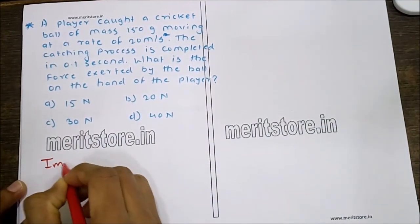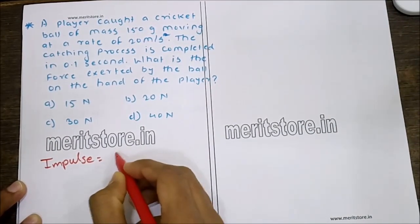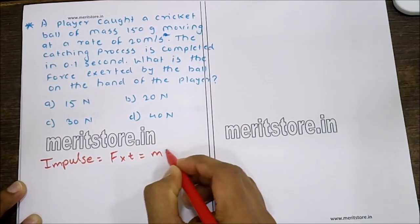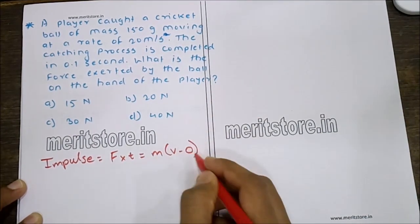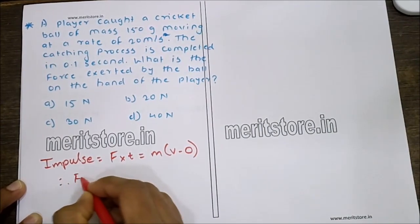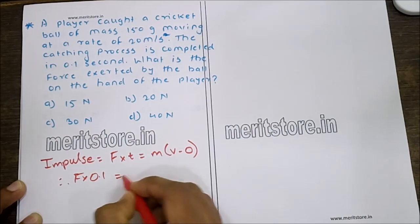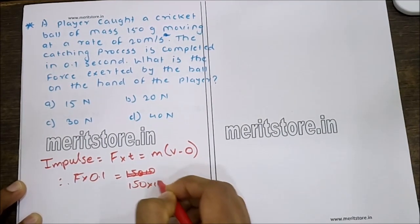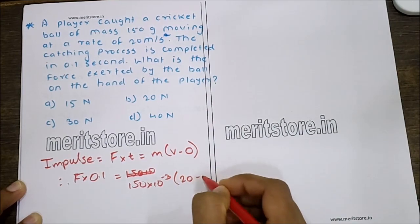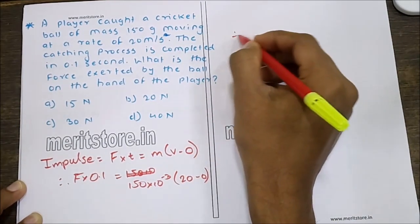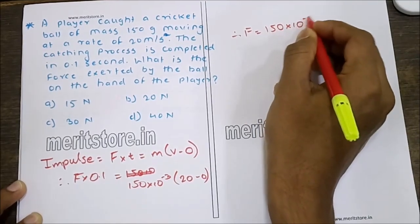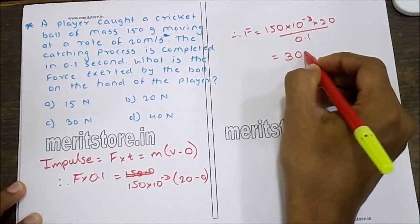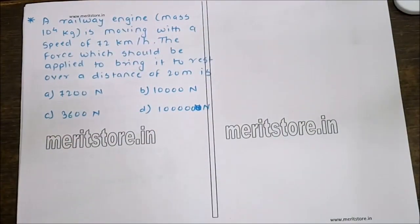Impulse is nothing but change in momentum, which is also given by F×T. Since the final velocity is 0, force × 0.1 = 150×10⁻³ × 20. Therefore force = 150×10⁻³ × 20 / 0.1 = 30 N. Hence option C is the correct answer.